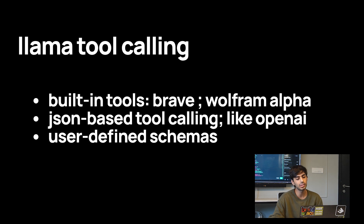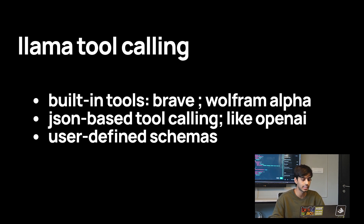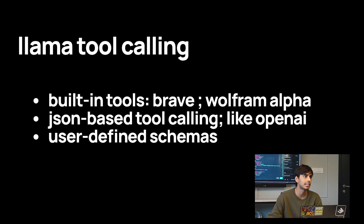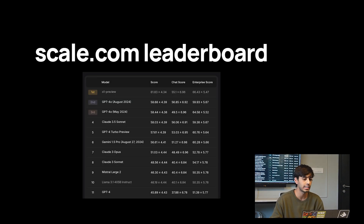For example, I would expand a description a lot more — adding when to call it, what will be returned, and what the functionality is. On the parameter level, adding expected types also helps, because a lot of times the LLM will mess up the type — you'd expect say 5% but it would output 0.05.